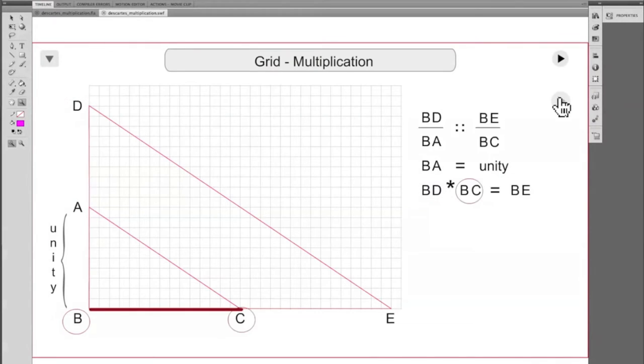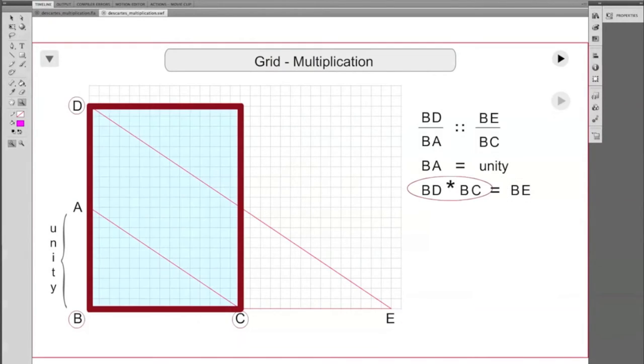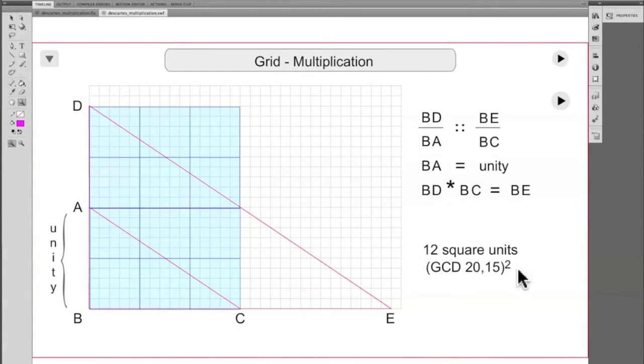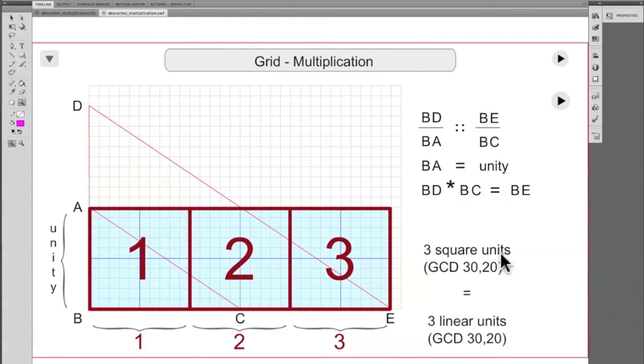Where BD times BC equals BE. Euclid's multiplication resulted in a rectangular area. Using the grid reference, you get a 20 by 15 rectangle, with the greatest common denominator square being a 5 by 5 square. You reapportion those, and you get 3 ten by ten square units equal to 3 linear units.